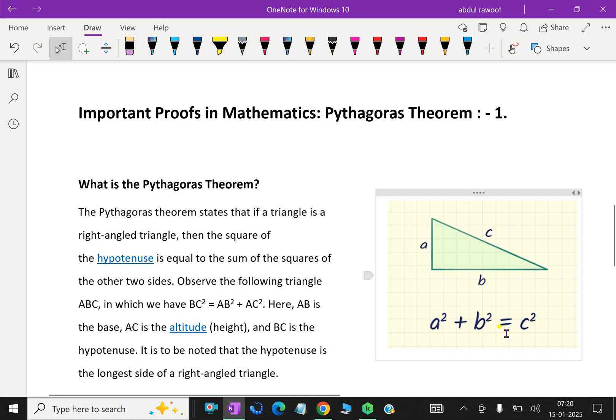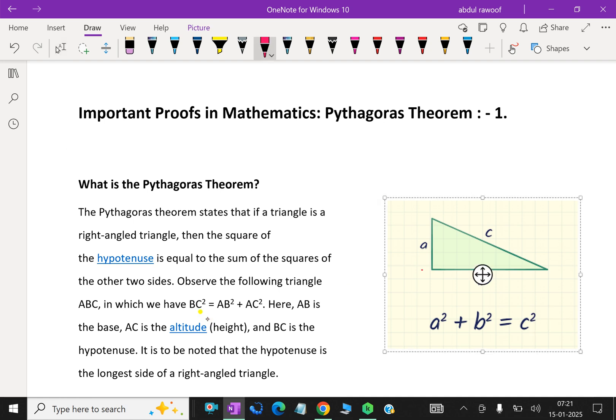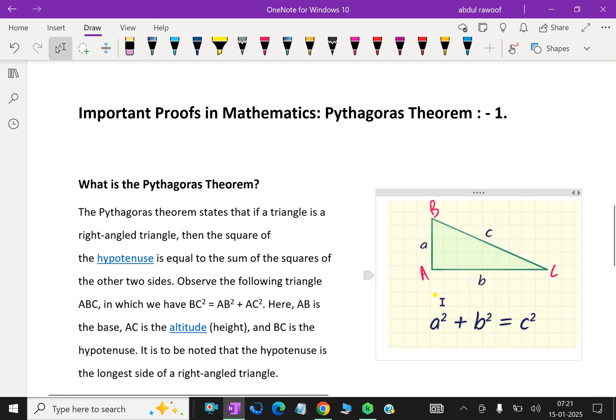Observe the following triangle ABC in which BC² = AB² + AC². Here AB is the base and AC is the altitude, that height, and BC is the hypotenuse.